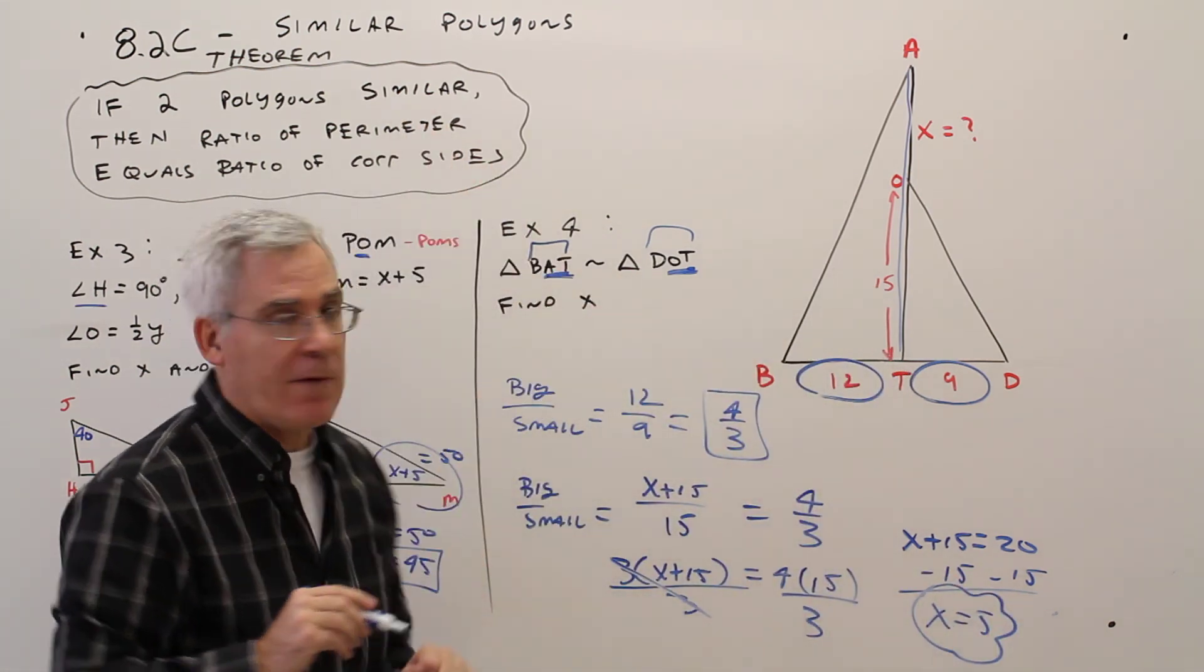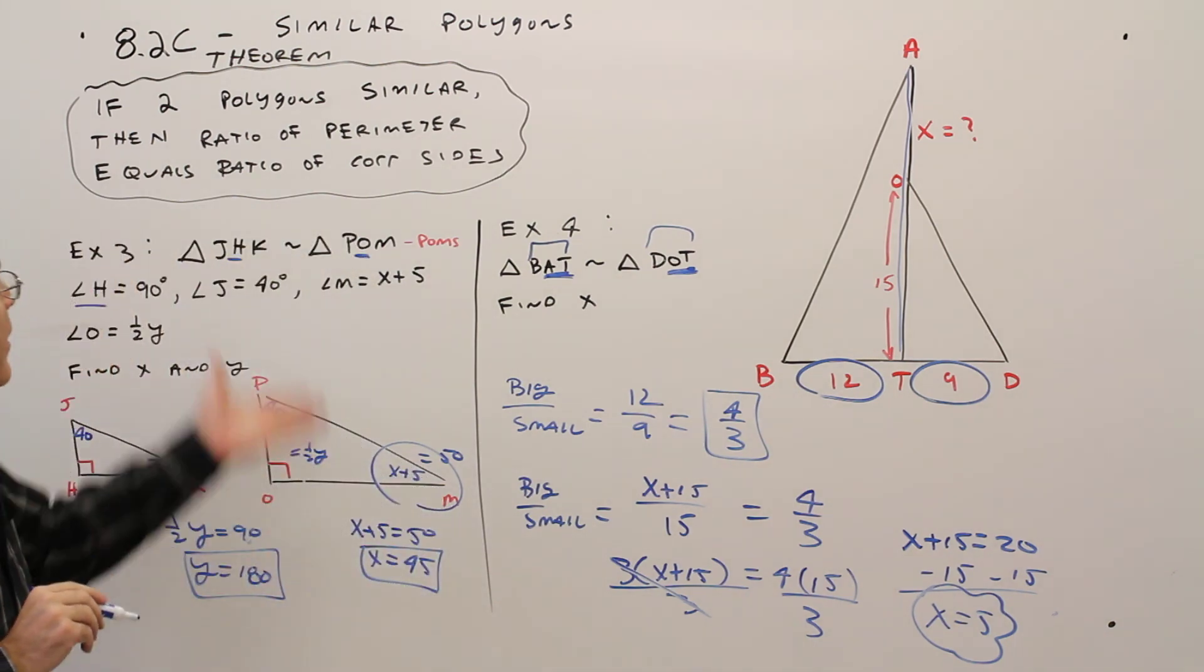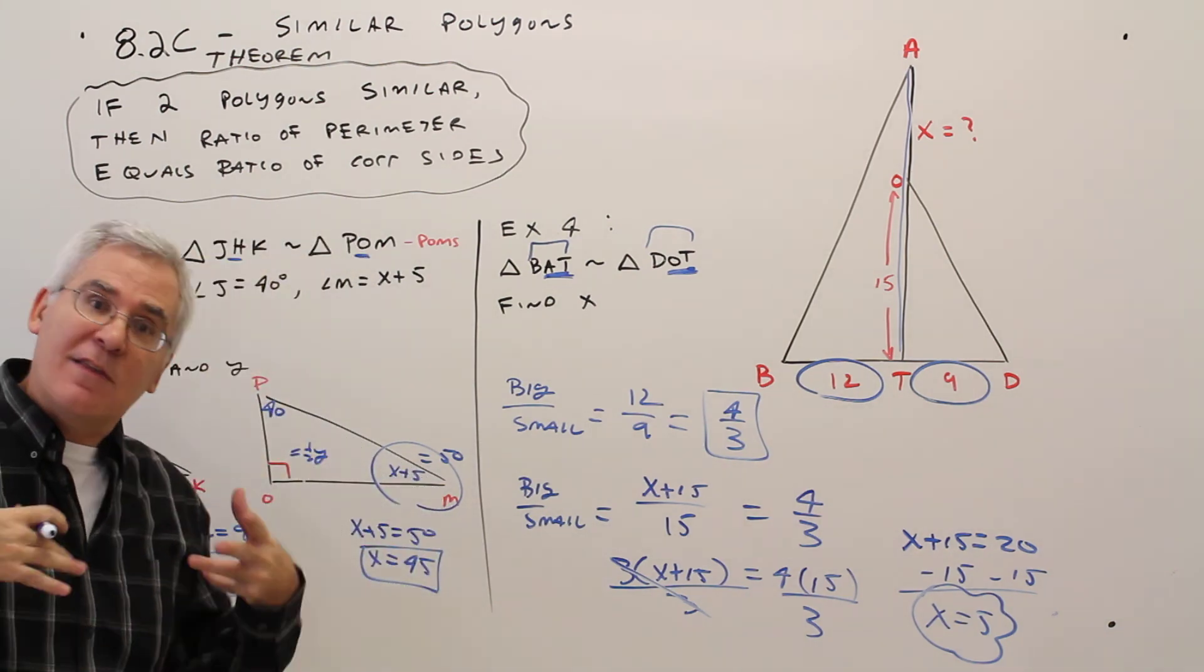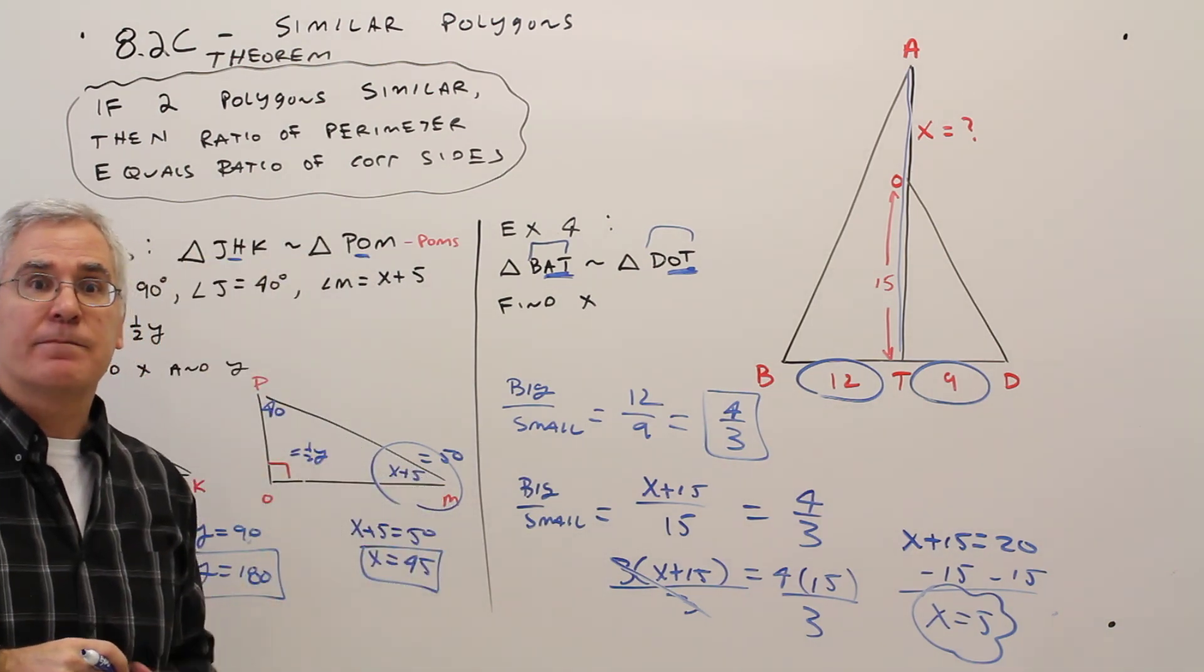And X equals 5, which is what we were asked to find. So there you have it. A few more examples dealing with similar polygons.